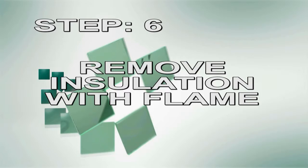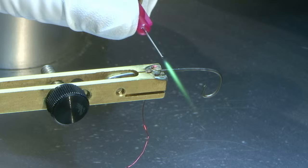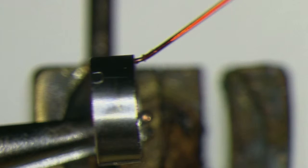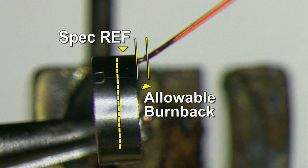Step 6. Remove insulation with flame. Apply the torch flame to the top middle of the ring to remove the insulation from the wire. Insulation should not be melted away or burned back more than half the height of the ring.